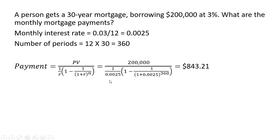I'm going to use the same formula but plugging in these values here. $200,000 is a present value. Plugging in for the monthly interest rate and plugging in for the number of periods this person would have a monthly mortgage payment of $843.21.